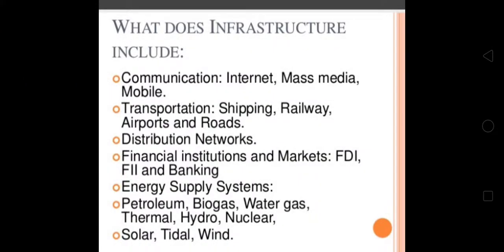Now, what does infrastructure include? Infrastructure includes different components. First is communication: internet, mass media, and mobile. Second is transportation: shipping, railway, airports, and roads. Third is distribution networks. Fourth is financial institutions and markets: FDI, FII, and banking.